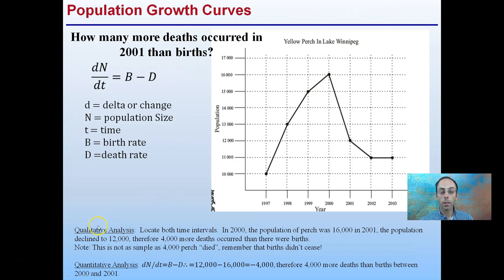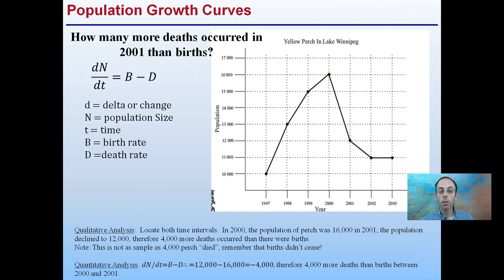The analysis is to locate both time intervals: year 2000 and 2001. In the year 2000, the population of perch was 16,000, and the population declined to 12,000 in the year 2001. Therefore, 4,000 more deaths occurred than births.